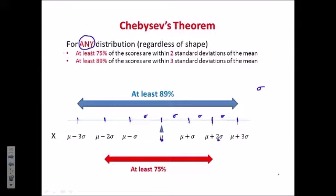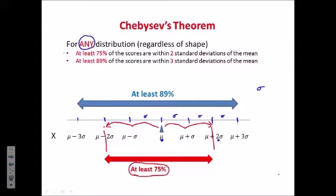What Chebyshev says is that regardless of the shape of the distribution, between two standard deviations from the mean in either direction, in that interval, would be at least 75% of the scores in that distribution. Similarly, within three standard deviations of the mean in either direction, in that interval, would be at least 89% of the scores. And this is true regardless of the shape of the distribution.